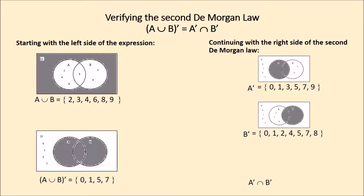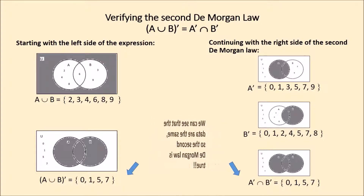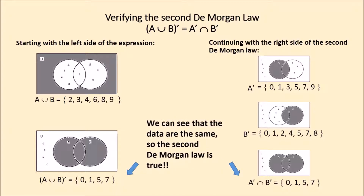Complement of subset A intersection the complement of subset B: the Venn diagram shows the numbers that are in the complement of A and in the complement of B. The numbers that can be read are 0, 1, 5, 7. We can see that the data are the same, so the second De Morgan law is true.